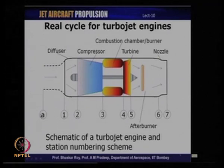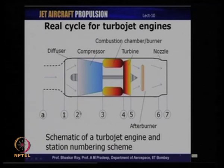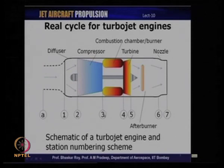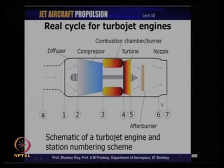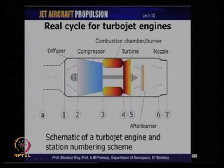The station numbers are: A for the free stream, 1 for diffuser entry, 2 for diffuser exit and compressor entry, 3 for compressor exit and combustion chamber inlet, 4 for combustion chamber outlet and turbine inlet, 5 for turbine outlet, 6 for after burner exit or nozzle entry, and 7 for nozzle exit. We will use this numbering scheme not just for turbojet analysis but also for turbofan and turboprop analysis subsequently.